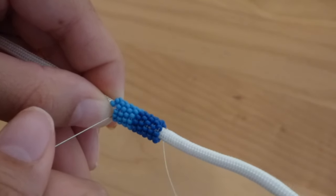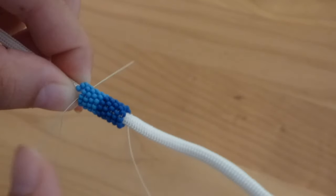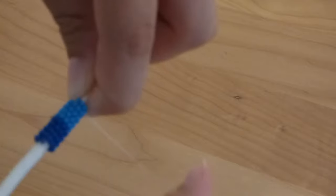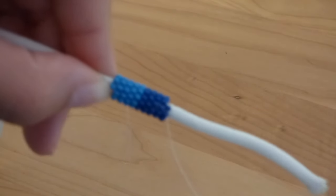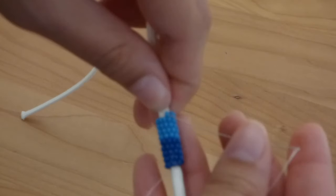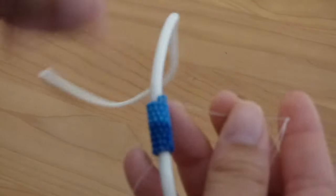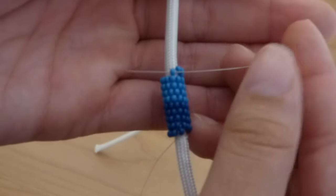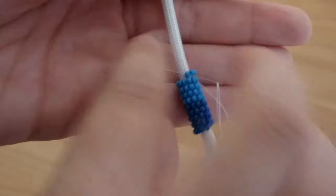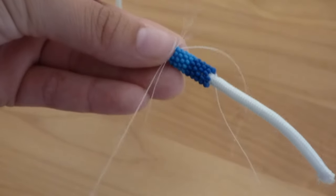Then go right through the paracord where your beads end and pull all the way through, as you can see. And then go through that last bead and pull all the way through.